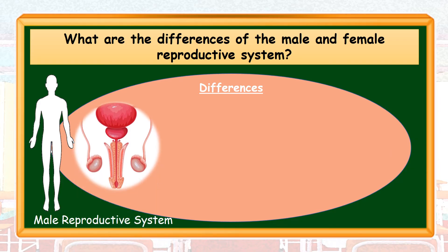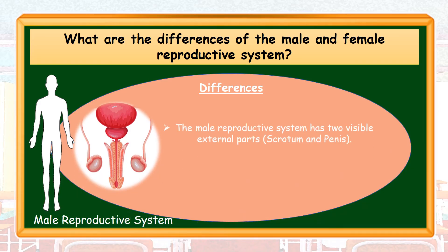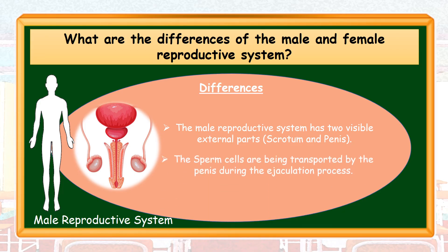For the male, number one, the male reproductive system has two visible external parts, and these are the scrotum and penis. And number two, the sperm cells are transported by the penis during the ejaculation process.